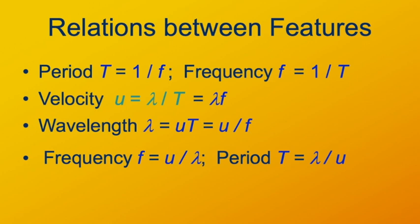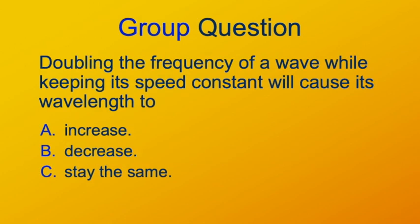Now think about this and discuss it with your group if you're watching in one; otherwise just think about it yourself. If you have a wave and the speed is constant but you double the frequency — twice as many waves per unit time — will that make the wavelength increase, decrease, or stay the same? Pause the video and answer before you go on. The answer is that it will cause the wavelength to decrease. You have the same distance traveled in time but twice as many waves, so they must be twice as close together.